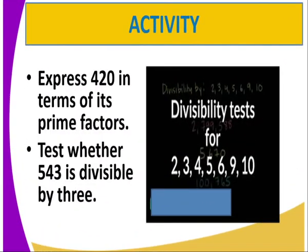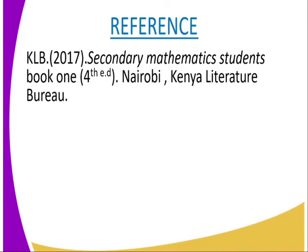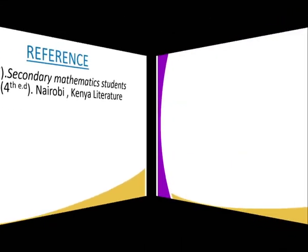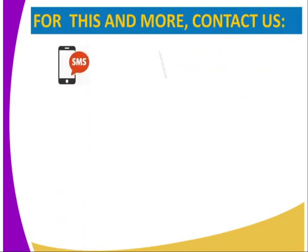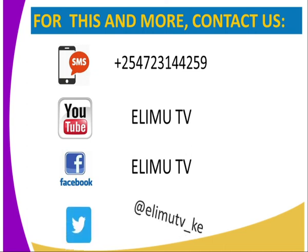Having done and said that, you can have the following activity whereby you are required to express 420 in terms of its prime factors and also you test whether 543 is divisible by 3. For more reference, you can refer to KLB, Secularist Mathematics Students Book 1, which is from Kenya Literature Bureau, Nairobi. And to get this lesson and many more, you can contact us by sending us an SMS through the number that is on our screen, or you subscribe to our YouTube channel, which is Elimu TV, or our Facebook page, which is also Elimu TV, or you tweet us at Elimu TV underscore Kenya. Let us subscribe to our channel and we shall get more of our mathematics form 1 lessons. Thank you.